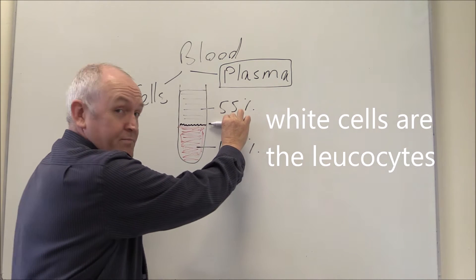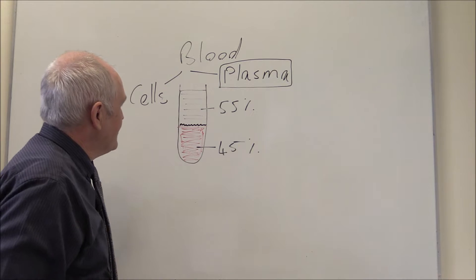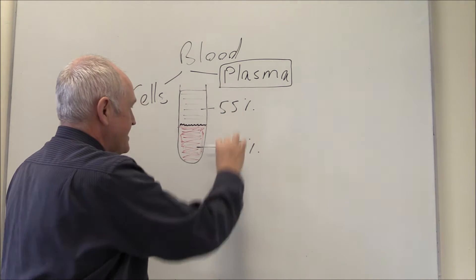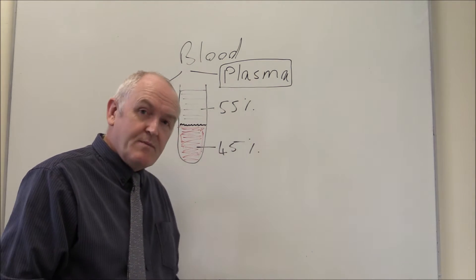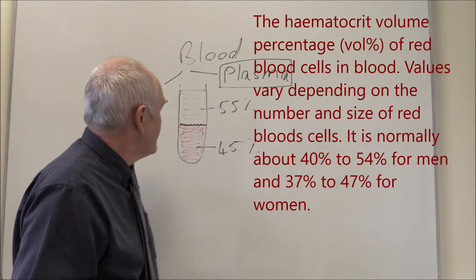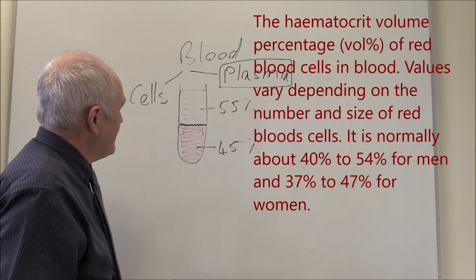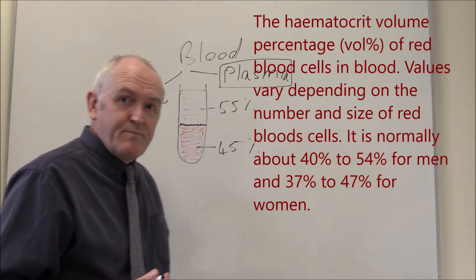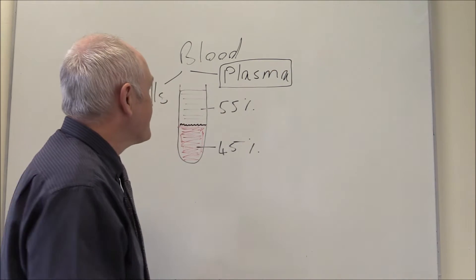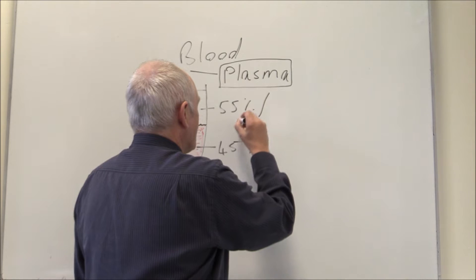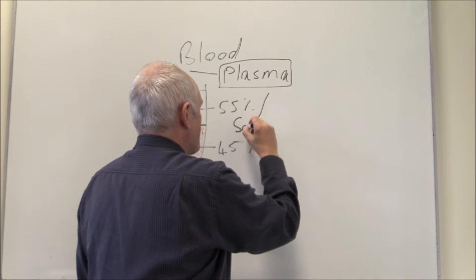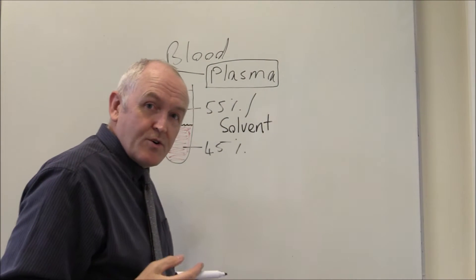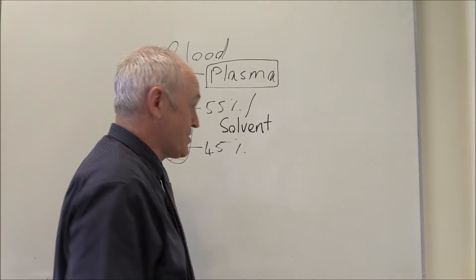The white cells are one percent or less of the volume. The amount of blood that is red cells we term the hematocrit. But today we want to look particularly at the plasma, and the plasma contains a solvent - in plasma, of course, the solvent is going to be water.